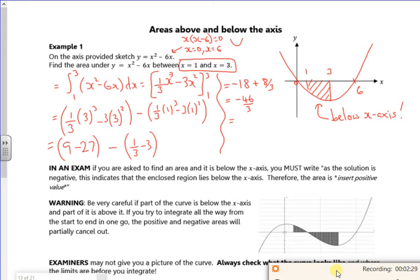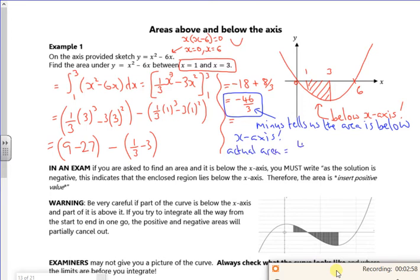The minus here tells us the area is below the x-axis, so the actual area is 46 over 3 unit squared. It's like you're stood in the room and your x-axis is the floor. If you do an area from the floor up to the ceiling it's positive, but say you were upstairs and your floor is the x-axis, and if you wanted to do the area of the kitchen downstairs, it shows a negative area but it's still a physical area, it's still there.